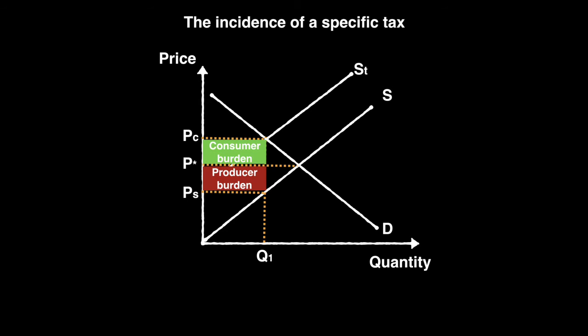The consumer surplus is represented by the area above the price paid by consumers and below the demand curve — it has clearly been reduced by the imposition of the tax. The producer surplus is represented by the area above the supply curve and below the price that sellers receive, and it has also been reduced by the tax. The green and red portions represent the revenue taken by the government, but there is still an unaccounted-for region represented by the blue triangle on the right. This area represents our deadweight loss — a reduction in the overall welfare of society since no party can enjoy that benefit. The value of each of these depends greatly on the elasticity of demand for the product.